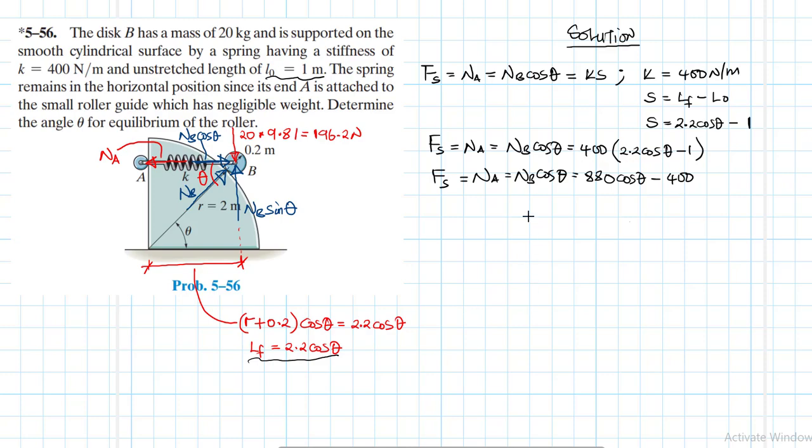Therefore, our FS which is equal to NA which is also equal to NB cos theta is going to be equal to 400 times 2.2 cos theta minus 1. This is therefore equal to 880 cos theta minus 400.